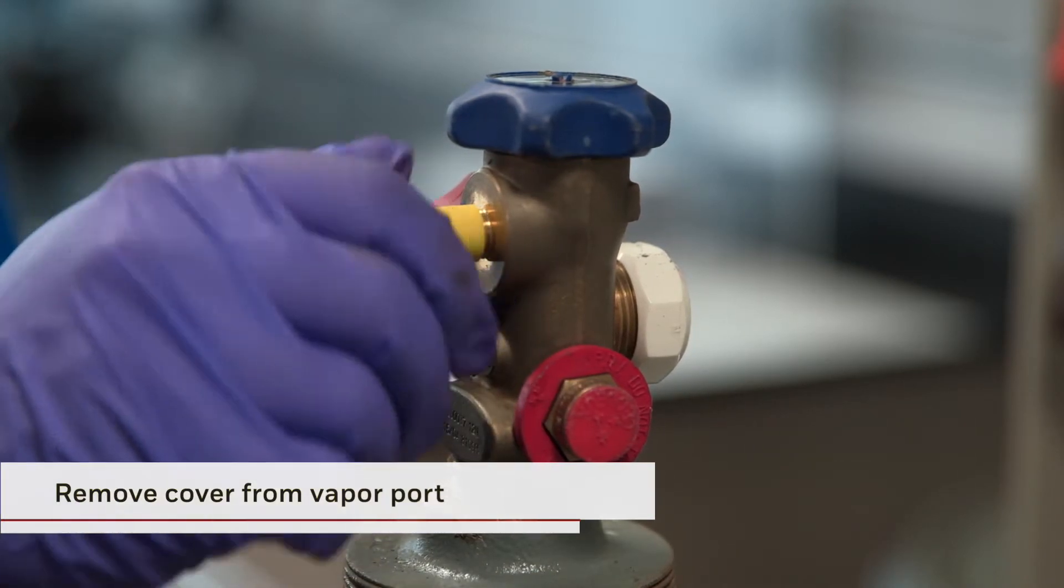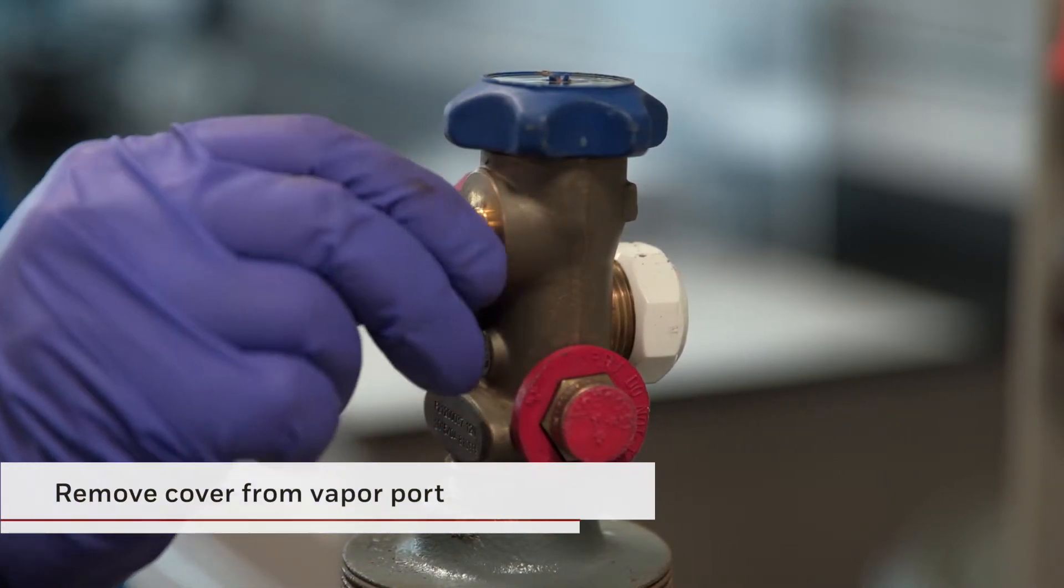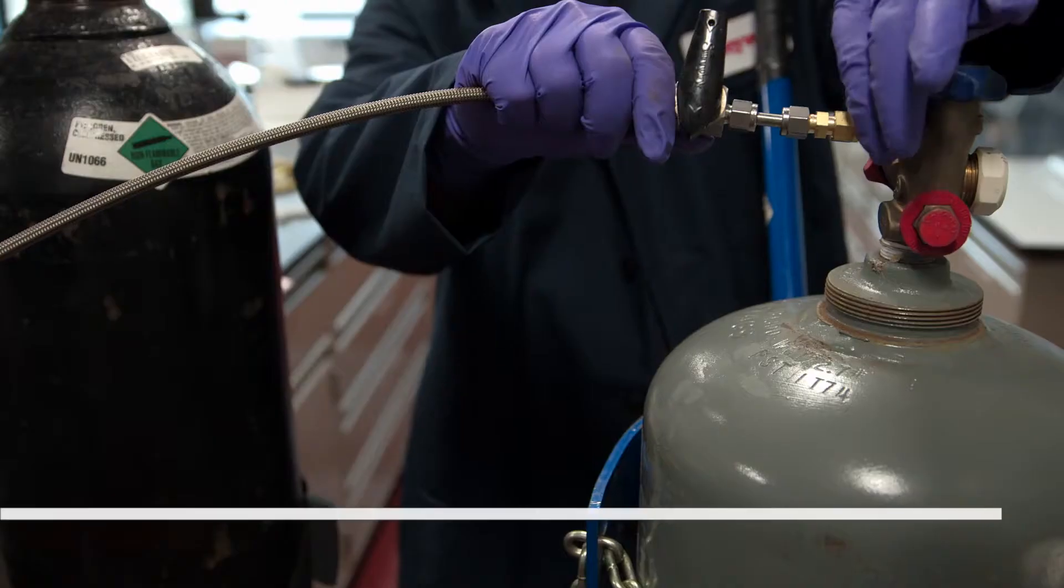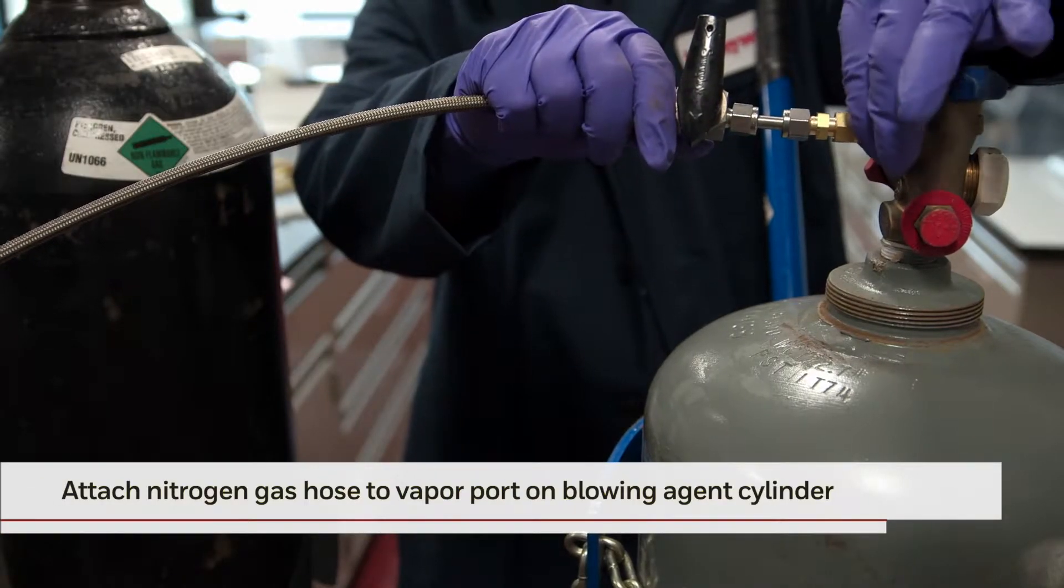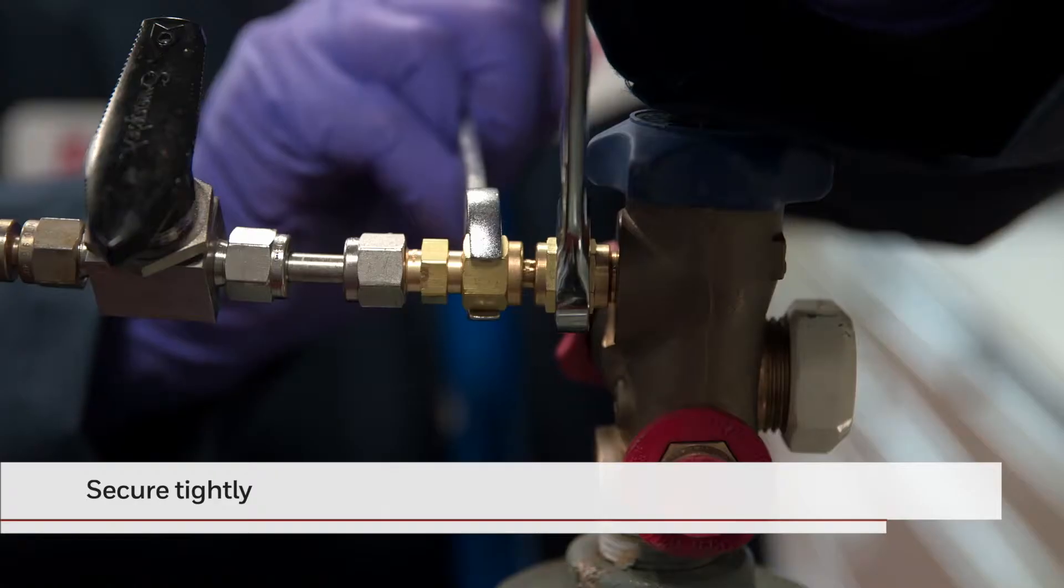Remove the cover from the smaller port, which will be used for the nitrogen vapor to enter the blowing agent cylinder. Connect the nitrogen gas hose to this small blowing agent cylinder port and secure tightly.